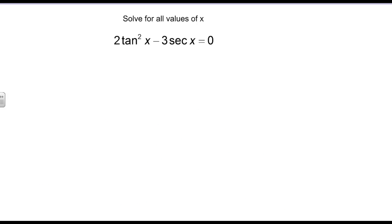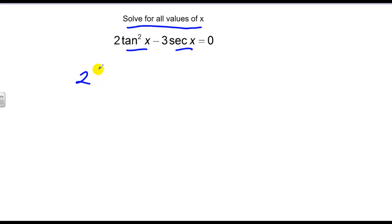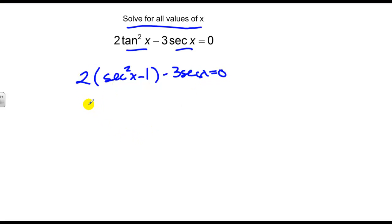Now we move from finding values between zero and two pi to finding all values — meaning every time we go back around the circle, we'll hit that value again. Notice this next problem appears factorable, but again, we have different functions, so we can't. We'll use a Pythagorean identity: one plus tangent squared equals secant squared. So two times secant squared minus one equals tangent squared, giving us two secant squared minus three secant of x minus two equals zero after multiplying through.